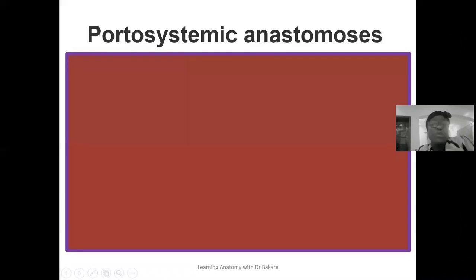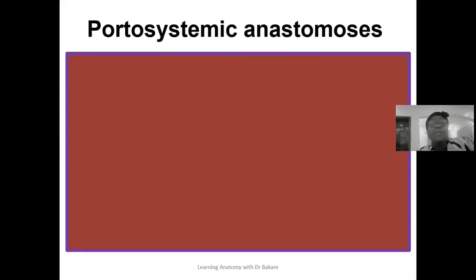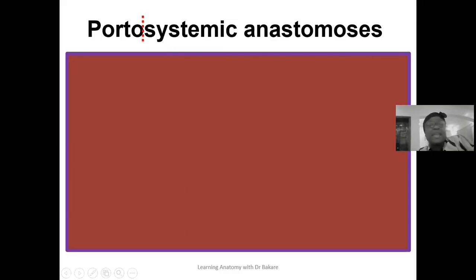The portosystemic anastomosis is a communication network created between the portal venous system and the systemic venous drainage. If you try to break the name down, you see that it is a combination of two venous drainage systems — the portal venous system and the systemic venous drainage. That is why it is so named the portosystemic anastomosis.